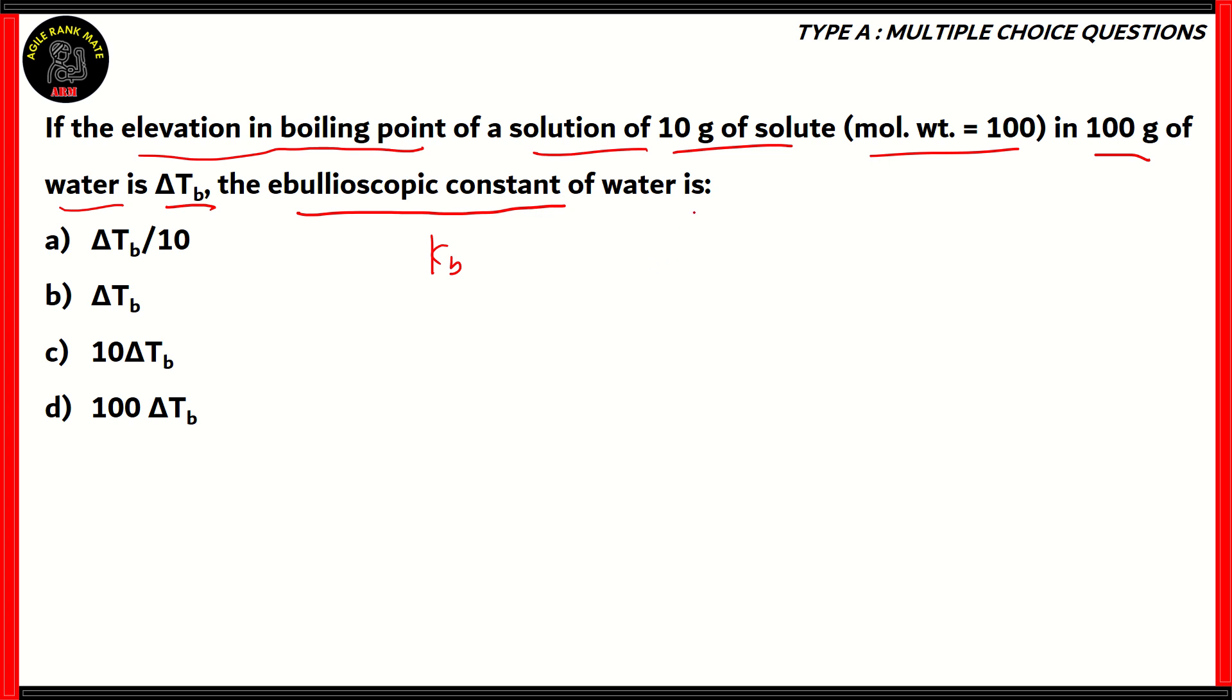In order to solve this question, you would need to find the relation between the elevation in boiling point of a solution with the ebullioscopic constant of water. So, delta Tb basically stands for 1000, which is a constant, times Kb, which is the ebullioscopic constant, times the weight of the solute divided by the weight of solvent multiplied by molecular weight.